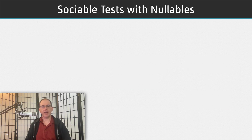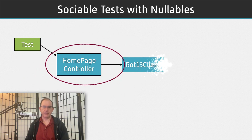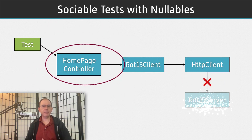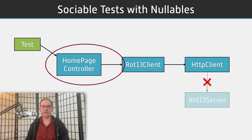Nullables allow you to create narrow, sociable, state-based tests. They test a specific part of your code, but they don't isolate it from its dependencies. Instead, all the dependencies run for real, all the way out to the very edge of the system. But because the external systems have been turned off by the nullables, the tests don't talk to the outside world. This means they're very simple and straightforward, like the best end-to-end tests, but they're fast and reliable, like good mock-based tests.